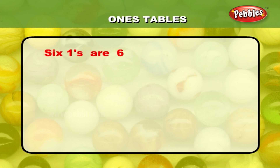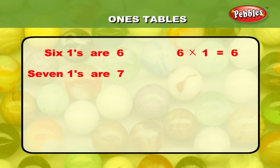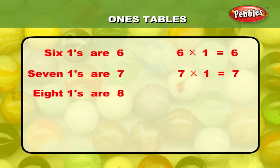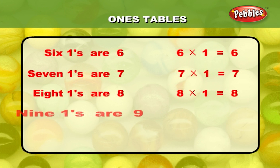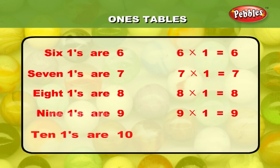6 ones are 6; 6 into 1 is equal to 6. 7 ones are 7; 7 into 1 is equal to 7. 8 ones are 8; 8 into 1 is equal to 8. 9 ones are 9; 9 into 1 is equal to 9. 10 ones are 10; 10 into 1 is equal to 10.